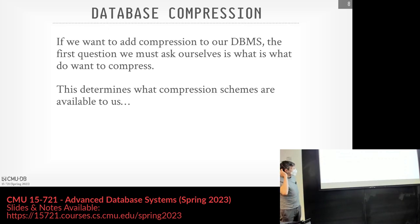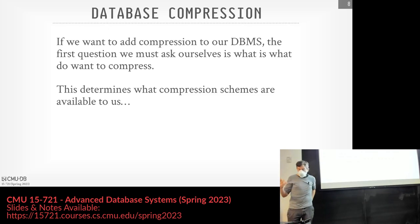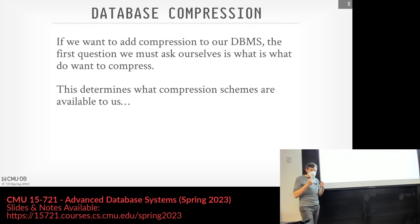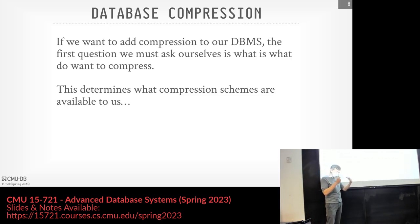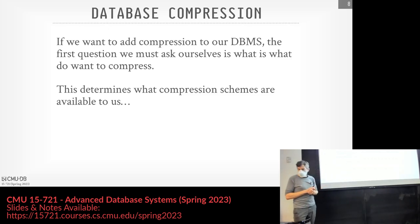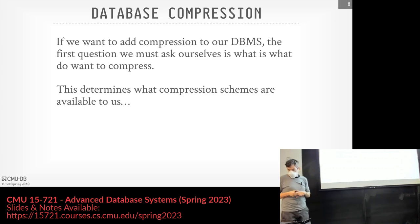There are a bunch of design decisions to deal with when adding compression to a database system. The most obvious: what are we going to compress, how are we going to compress it, and what is the scope of what we're looking at for compression? We need to look at all of these, and they'll inform how we decide what's the right compression scheme when we talk about columnar compression.